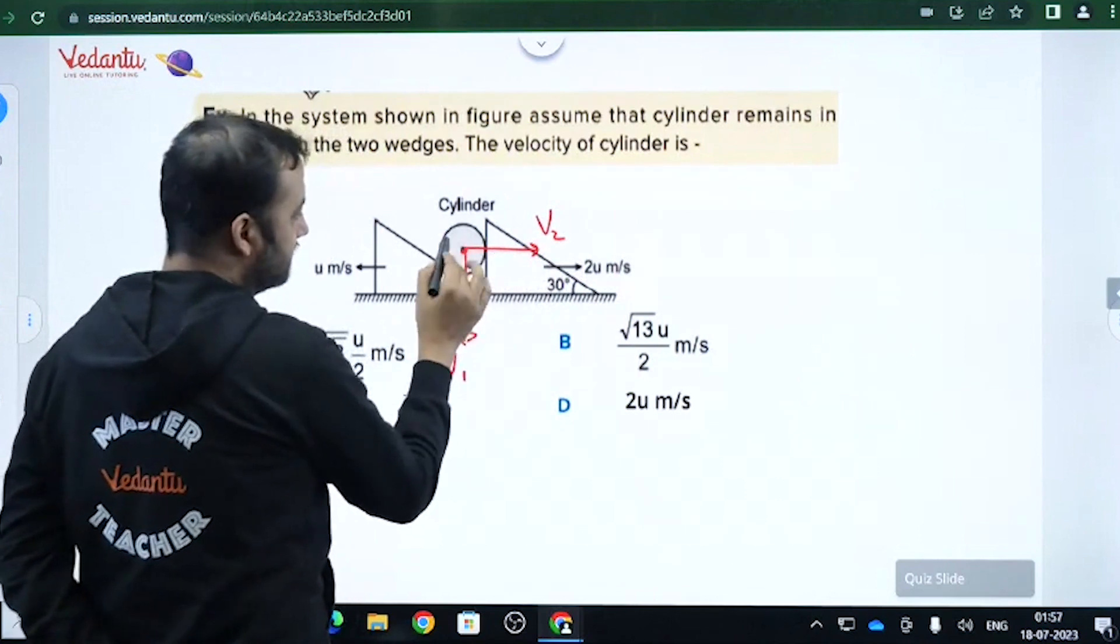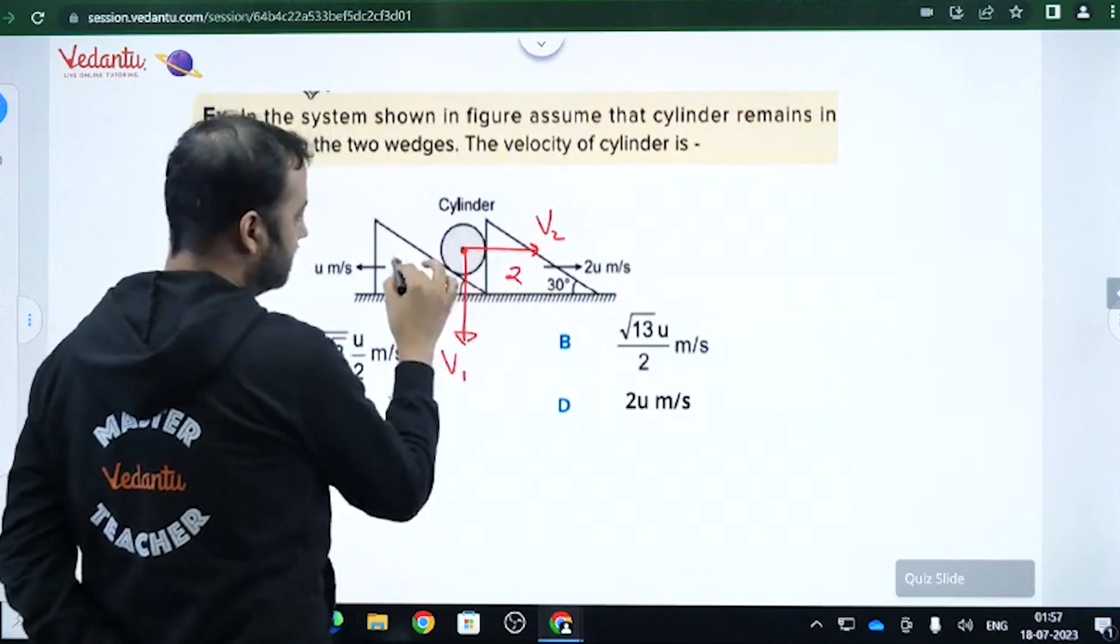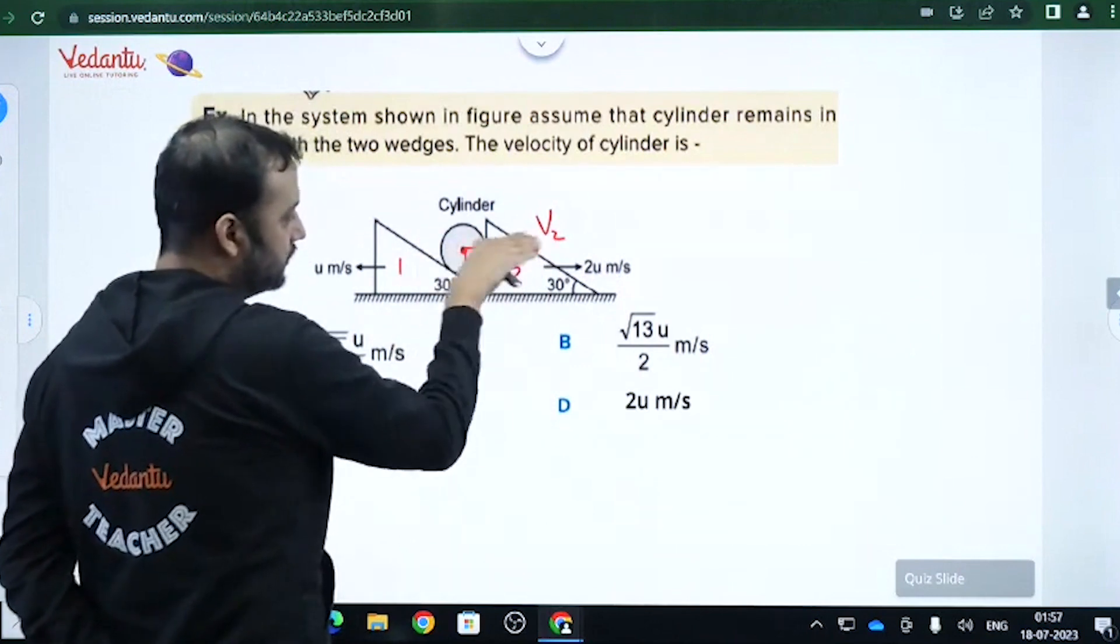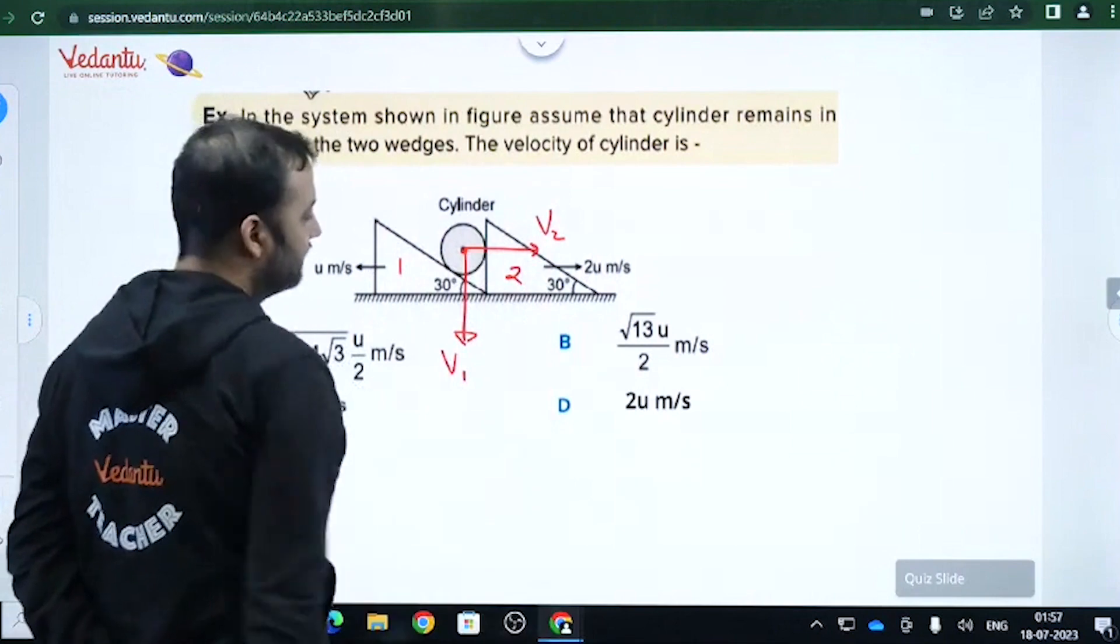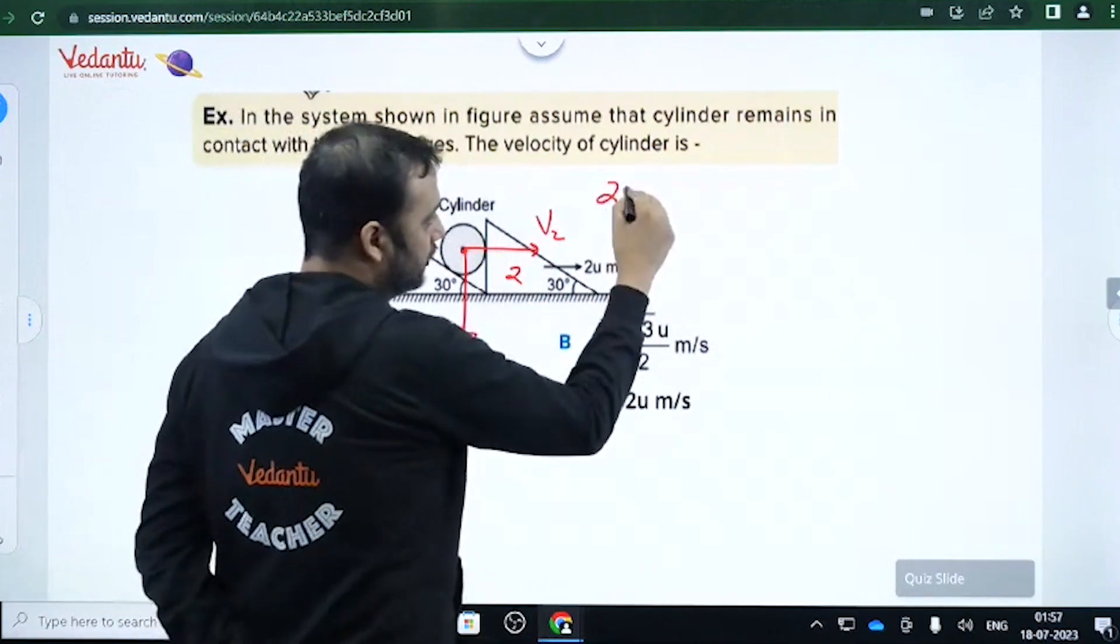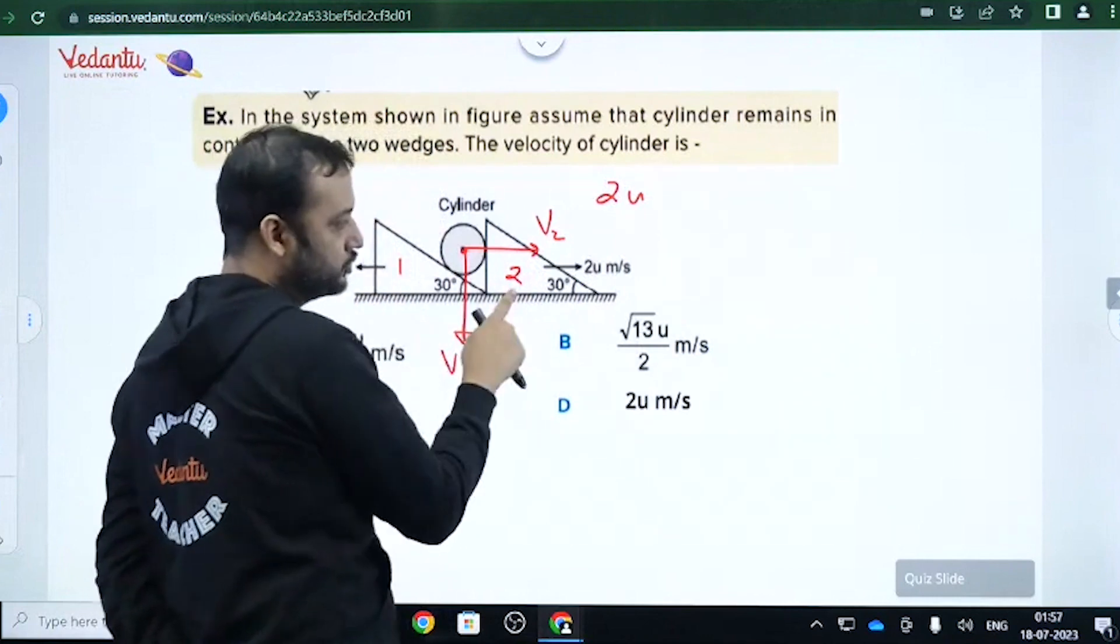Now, if you see contact between cylinder and wedge 2, and this is wedge 1, contact between cylinder and wedge 2 will always be maintained. So along this axis, which is the common normal, both should have same velocity. So what is the velocity of wedge along this axis, along the normal? Which is wedge 2.